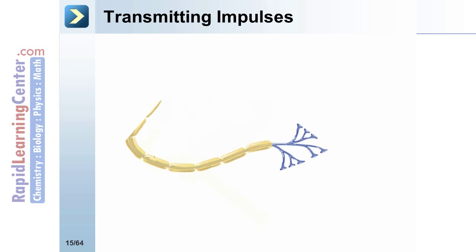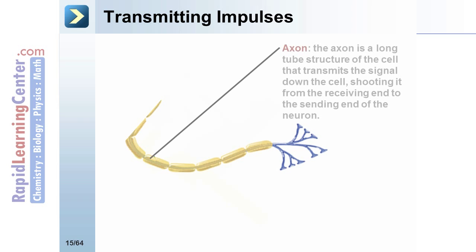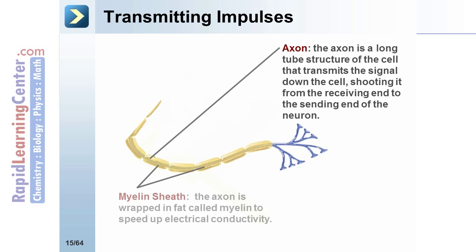Transmitting impulses: the axon is a long tube structure of the cell that transmits the signal down the cell, shooting it from the receiving end to the sending end of the neuron.